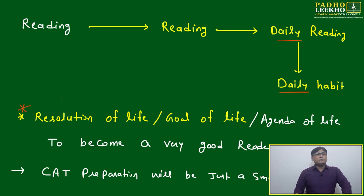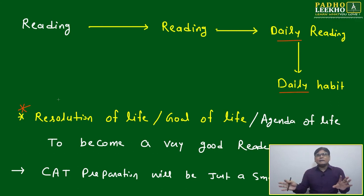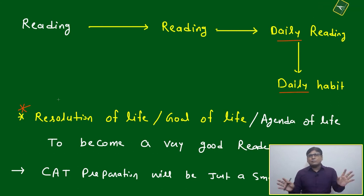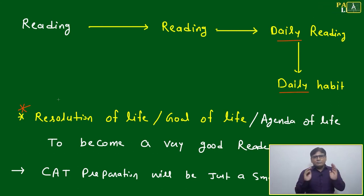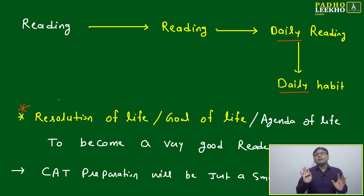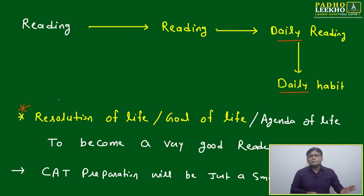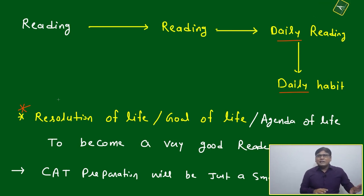If you have made that agenda, I give an example about Bill Gates. He was not thinking anything about success or making any company — nothing. He achieved one momentum: 80 books per year, and the only resolution was to just keep on reading for the next 20 years. Remaining things will be taken care of. That belief he was having, and it is correct also.